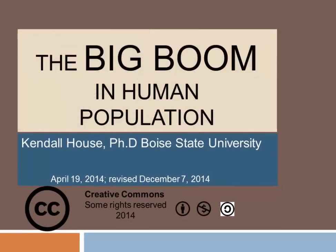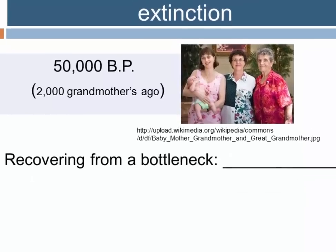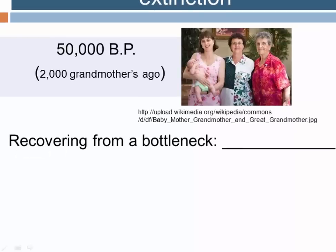This presentation is called 'The Big Boom in Human Population.' If we go back fifty thousand years ago — which is only about 2,000 generations, or roughly 2,000 grandmothers ago — somewhere between fifty thousand and a hundred thousand years ago, humans flirted with extinction. The human population ancestral to everyone alive today was reduced to a small population in what's called a bottleneck, down to as few as 10,000 humans of the species Homo sapiens sapiens.